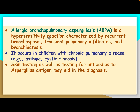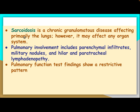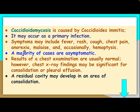Allergic bronchopulmonary aspergillosis is a hypersensitivity reaction characterized by recurrent bronchospasm, transient pulmonary infiltrates, and bronchiectasis. It occurs in children with chronic pulmonary disease like asthma or cystic fibrosis. Skin tests as well as testing for antibody to Aspergillus antigen may aid in the diagnosis. Sarcoidosis is a chronic granulomatous disease affecting primarily the lungs; however, it may affect any organ system. Pulmonary involvement includes parenchymal infiltrates, miliary nodules, and hilar/paratracheal lymphadenopathy. Pulmonary function tests show a restrictive pattern.